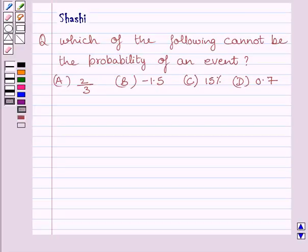Hi and welcome to the session. Let us discuss the following question. Question says, which of the following cannot be the probability of an event? A part is 2 upon 3, B minus 1.5, C 15 percent, D 0.7. We have to choose the correct answer.